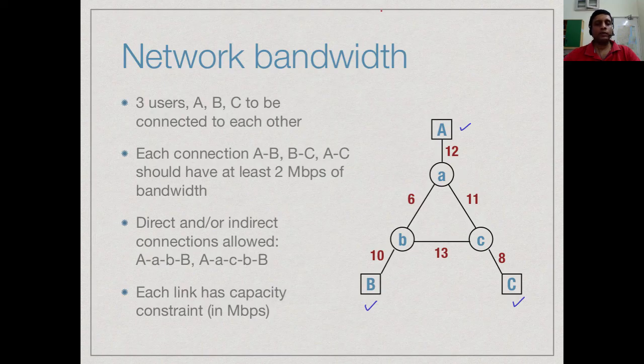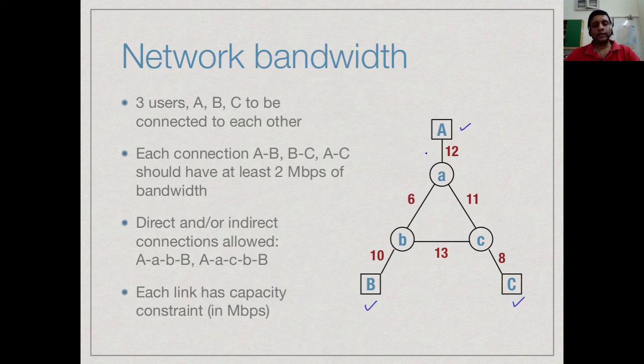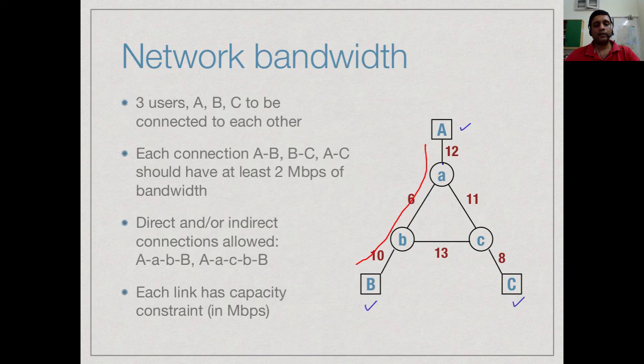We want at least 2 Mbps connectivity along these three routes. Now, notice that from A to B there are two ways I can send packets. I can send them directly via a and B or I can send them indirectly via small c.